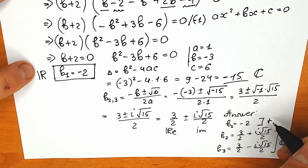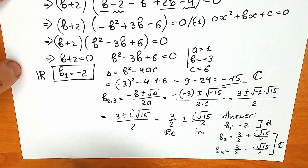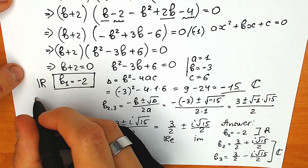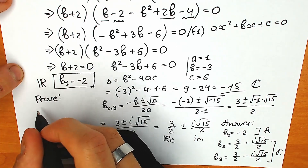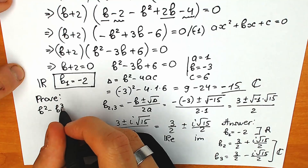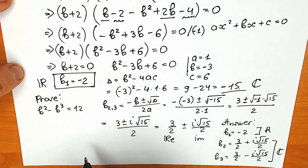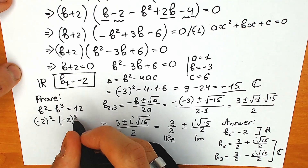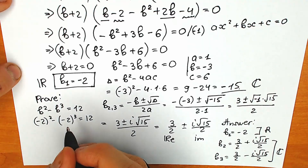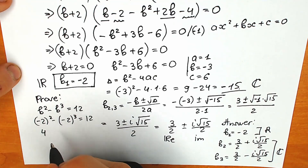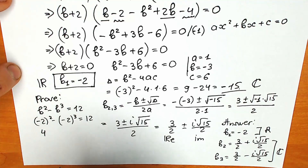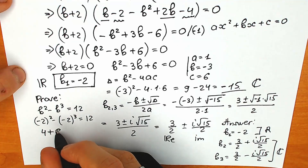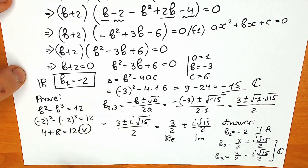Let's verify b₁ = -2 in the original equation b² - b³ = 12. Plugging in: (-2)² - (-2)³ = 4 - (-8) = 4 + 8 = 12. Our root is correct.